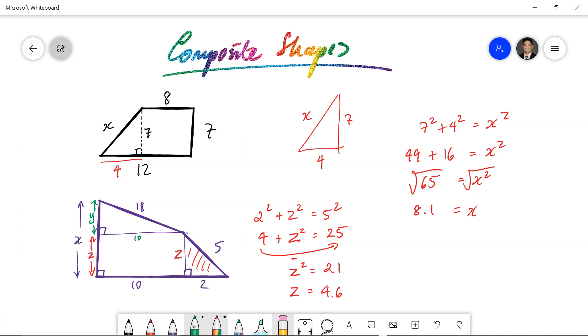Okay, let's move on to the other triangle, which is in the green. So we got y squared plus 10 squared is equal to 18 squared. Y squared plus 100 is equal to 324. Y squared is then 224, because we're going to subtract 100 from that. And the square root of 224 is 14.9.